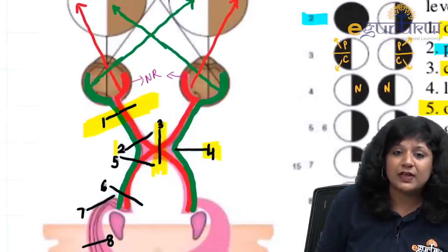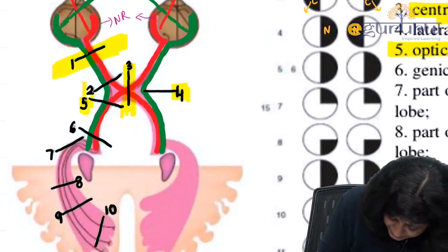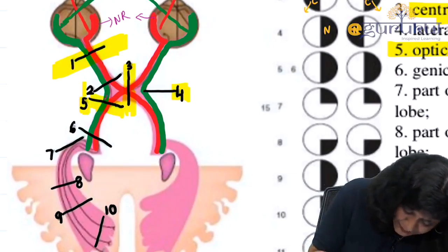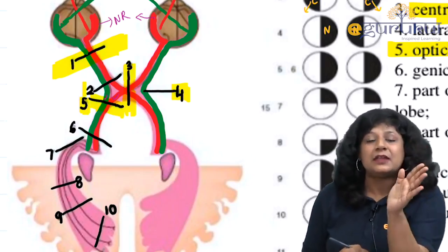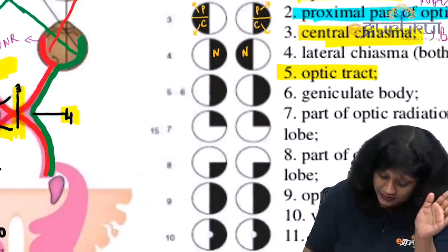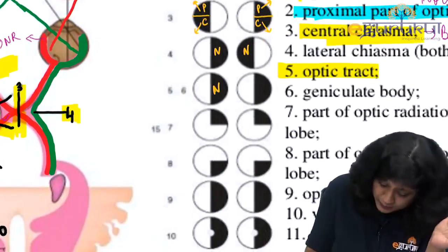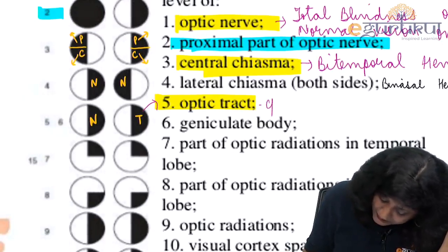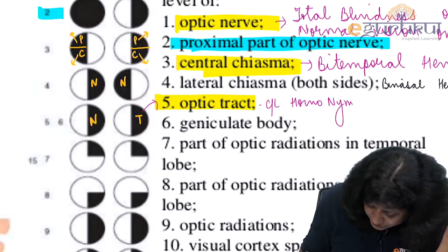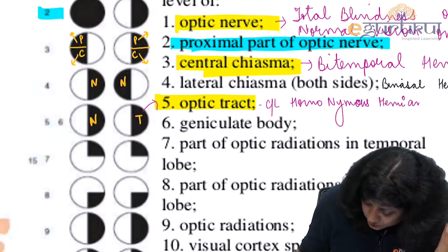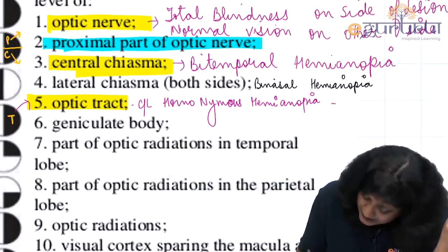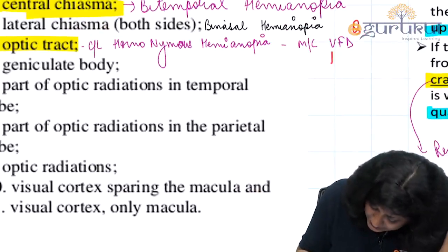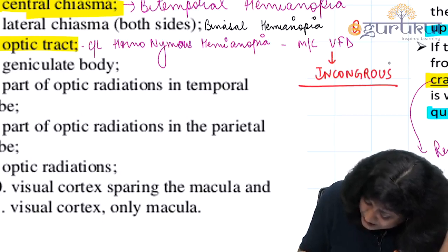At the level of the optic tract — site number 5 — the ipsilateral temporal fibers and contralateral nasal fibers are both present. The ipsilateral nasal field and the opposite side temporal field are both gone. For the first time, we are getting contralateral homonymous hemianopia. This is the most common visual field defect, and importantly, it is an incongruous type.